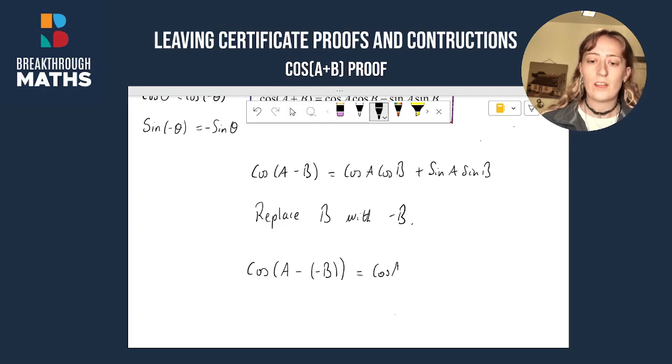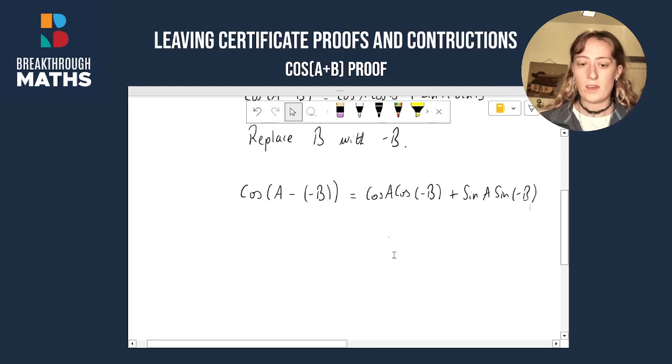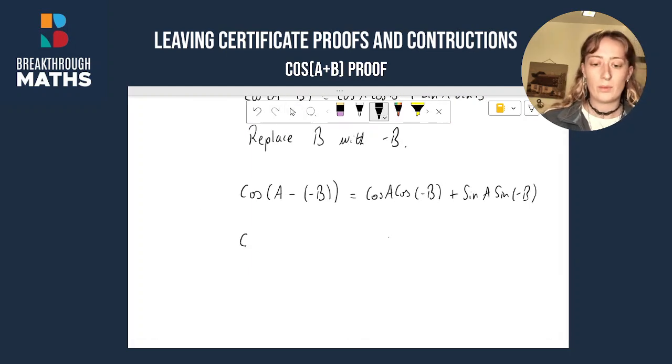We've got a cos A cos of minus B plus sin A sin of minus B. Now cos of A minus minus B, if you've got two minuses, it becomes a plus, becomes cos A plus B.